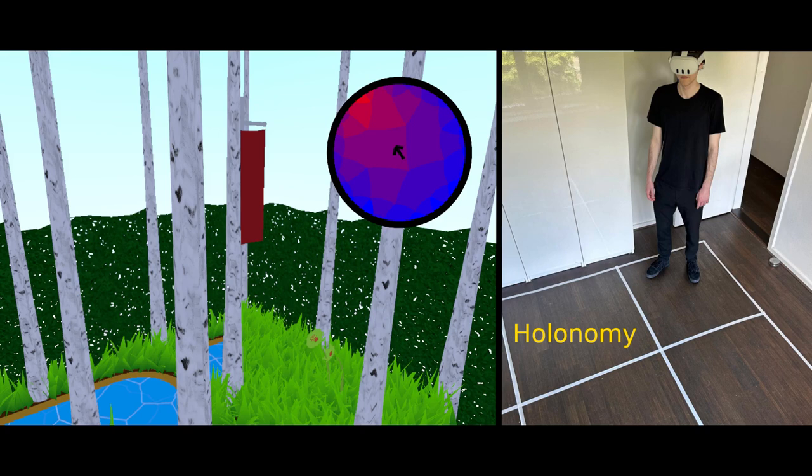Holonomy is a virtual environment based on the mathematical concept of hyperbolic geometry. Unlike other environments, Holonomy allows users to seamlessly explore an infinite hyperbolic space by physically walking. They use their body as the controller, eliminating the need for teleportation or other artificial VR locomotion methods.